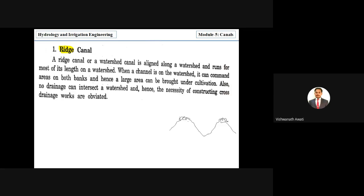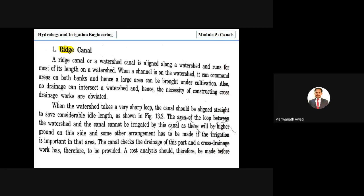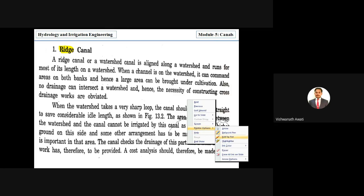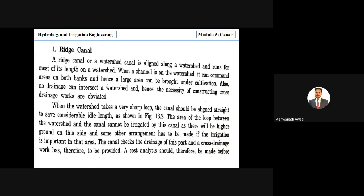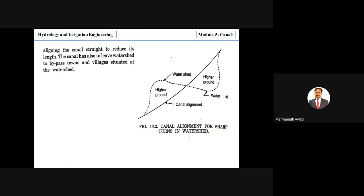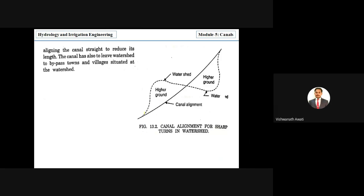There can be sudden changes in canal alignment because the watershed or ridge line itself changes suddenly. The dotted line in the diagram indicates the ridge or watershed line. Following it exactly covers more length, so to avoid excessive canal length, a straight alignment is preferred instead.